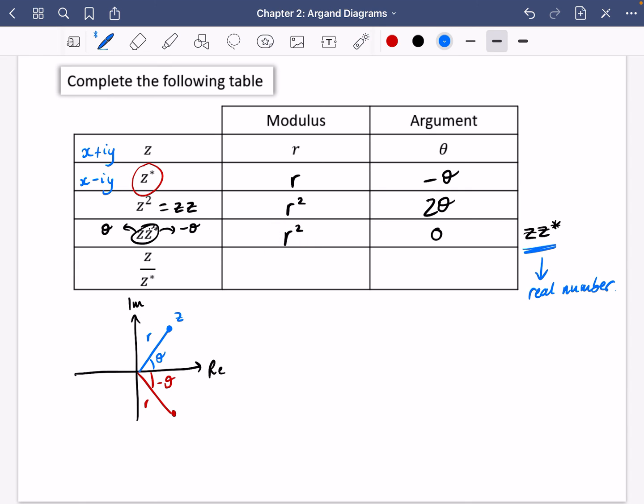Last one that we've got here. This time we have z over z conjugate. So the modulus we're going to be careful about here because we're just going to literally be dividing the moduli. So it will be r divided by r, which is just going to be one. But we have theta for the argument of the top, negative theta for the argument at the bottom. And when you divide, you subtract these. So it's going to be theta minus minus theta. And theta minus minus theta is theta plus theta, which is just two theta.